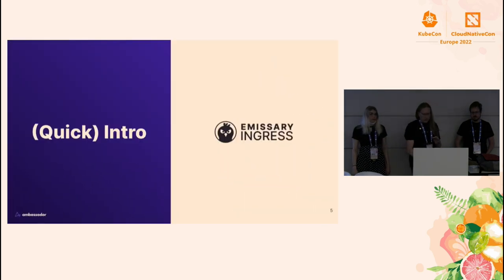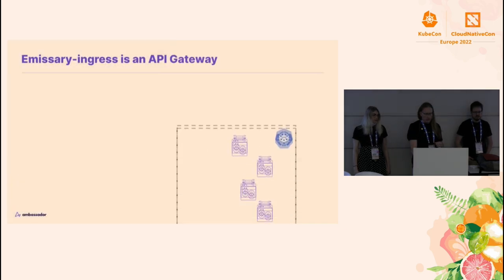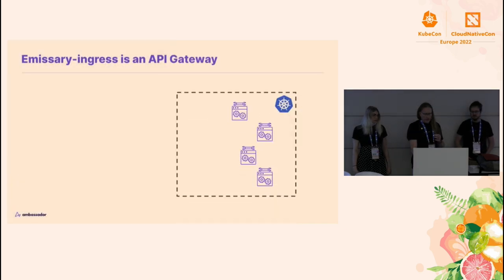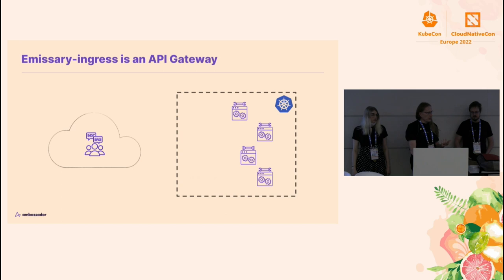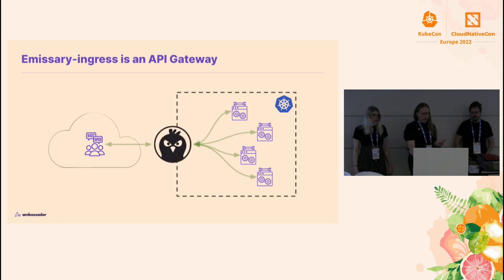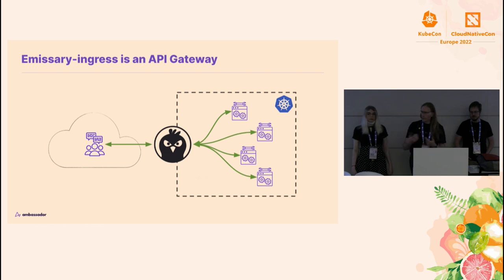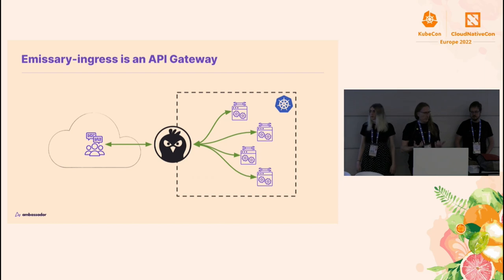For those of you who are less familiar with Emissary, let me do a really quick intro. It's an API gateway. If you have a Kubernetes cluster with services in it and you have some users who are not in that cluster, then Emissary's job is to sit at the edge of the cluster and mediate access from outside the cluster to inside the cluster.